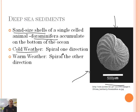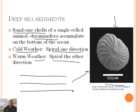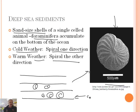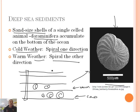Here's the deal: if it's cold weather the foraminifera spirals in one direction, and if it's warm weather it spirals in the other direction. These are deep sea sediments, so if you look at the bottom of the ocean you'll find these organisms spiraling in one direction at one level, and in the other direction at another level. This tells you whether it was cold or warm. We know how old these sediments are using rock-age techniques, and we can figure out what the climate was like thousands and thousands of years ago.